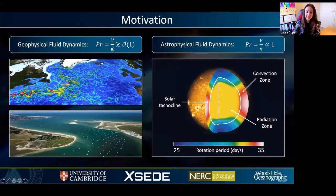On the other hand, in astrophysical flows, the Prandtl number is much smaller than one since heat diffuses much more rapidly than momentum, and this gives rise to different dynamics.